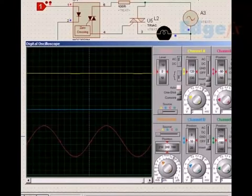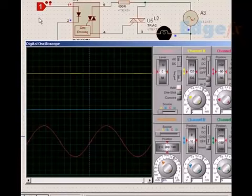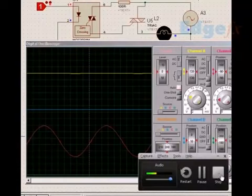So this is the advantage of using zero cross opto isolators for long life of the load, because it will start from zero. It will not start arbitrarily anywhere from the supply, so that you get the advantage. Thank you.